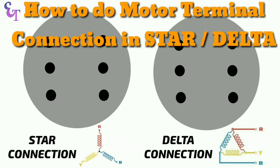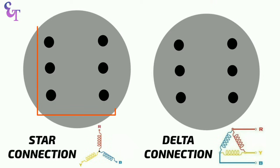Friends, we already know that in any three-phase motor six terminals are there which are named as U1U2, V1V2 and W1W2.